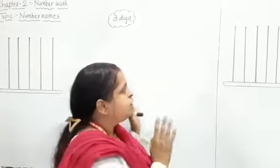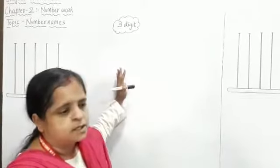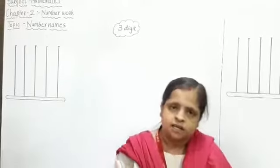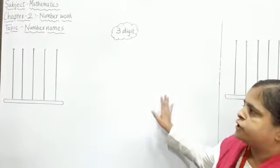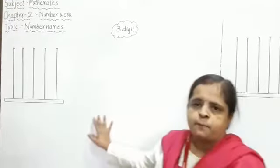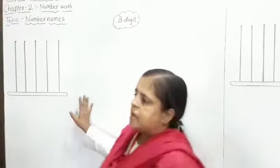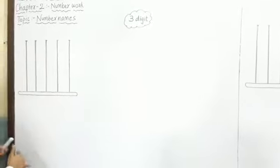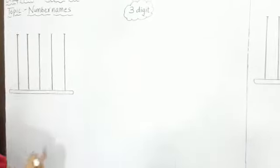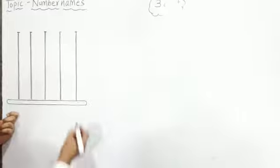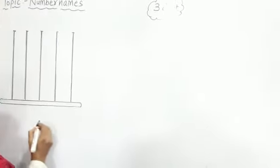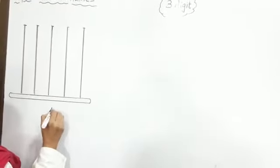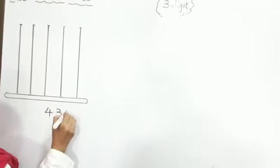We are going to see three digit numbers that you learned in third standard, but I am going to revise it today through an abacus. You can see here the abacus. And if I will take one number — 435.